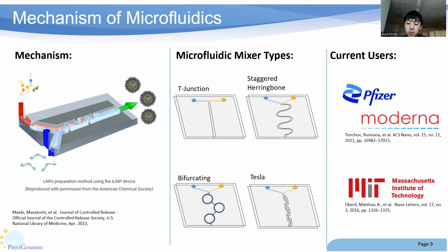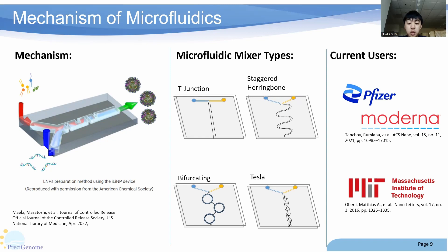In the middle section, we can see the common micromixer geometries used today. Starting from the top left, we have the T-junction, a widely used design where two fluid streams intersect at a T-shaped junction, inducing rapid mixing due to shear forces at the interface. The staggered herringbone to the right uses a pattern of herringbone-shaped grooves, generating secondary flows that result in effective mixing. At the bottom left, we have bifurcating mixers, which have multiple inlets and outlets, promoting intricate fluid mixing through repeated bifurcation and merging of the streams. The Tesla mixer is very similar in principle to the bifurcating mixer, and is actually what Precisionome uses for its own microfluidic chips.